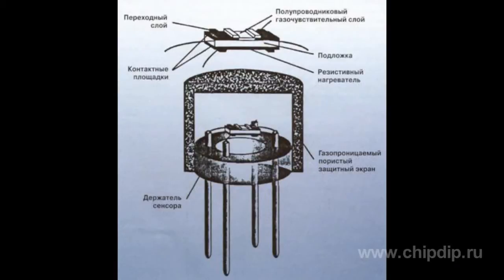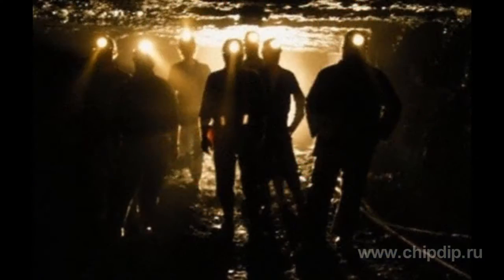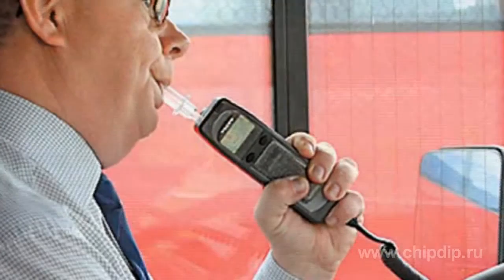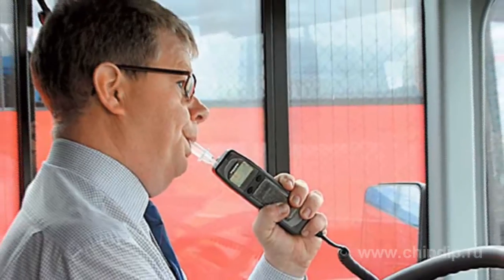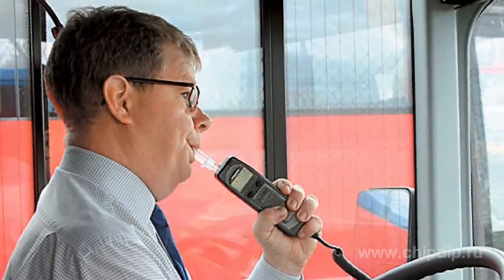Most of these sensors are created on the basis of tin oxide, the resistive resistance of which is quite large in clear air. If in the air there are explosive gases such as methane, propane, hydrogen, or organic vapors such as alcohol, essential oils, as well as many other gases and impurities, it significantly reduces. This distorts the sensor indications.